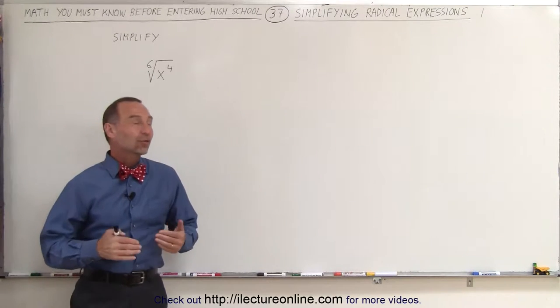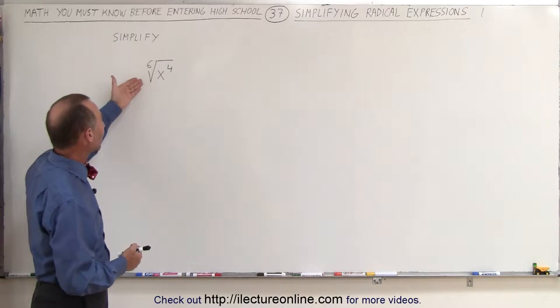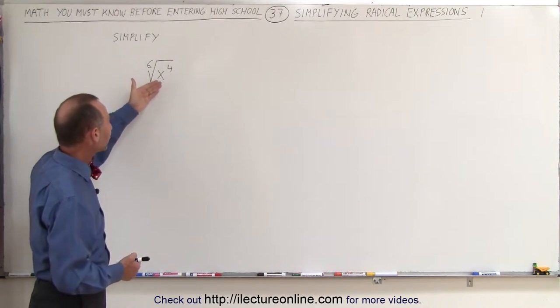Welcome to ElectronLine. Now we're going to try to simplify radical expressions. So here we have a radical, it's the sixth root of x to the fourth.